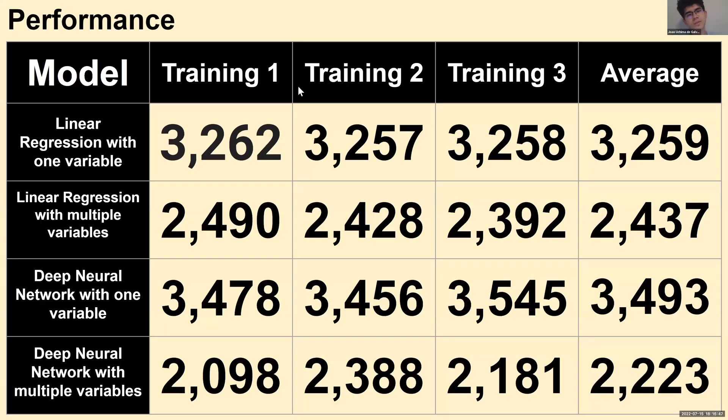Here's a graph and table for performance. We tested four different models: linear regression with one and multiple variables, and deep neural network with one and multiple variables. We tested the result of each model three times, so 12 in total, and we got our averages. This is the mean absolute error for each one.